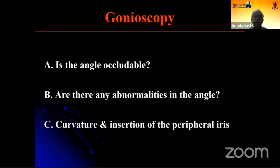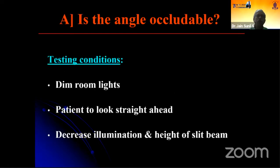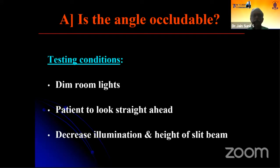Whenever you do a gonioscopy, you need to first answer certain questions, because that will help you detect whether the patient has an open angle or a closed angle. Whenever you want to answer whether the angle is occludable or not, first you have to dim the room lights and see to it that the slit beam does not cross the pupil, because that will cause artificial constriction of the pupil and a closed angle might appear open.